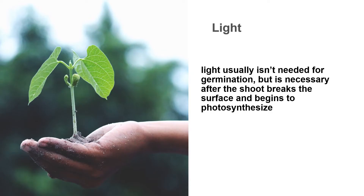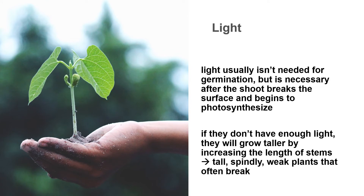Light usually isn't needed for germination, but it is necessary after the shoot breaks the surface and begins to photosynthesize. As the seedlings grow, they need a good source of light. If they don't have enough light, they will grow taller by increasing the length of stems in a process called etiolation. The result is a tall, spindly, weak plant that often breaks.